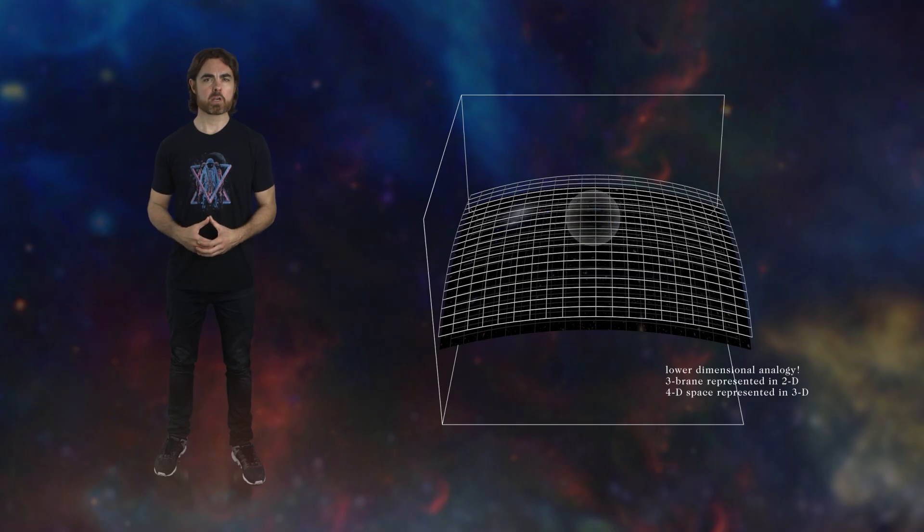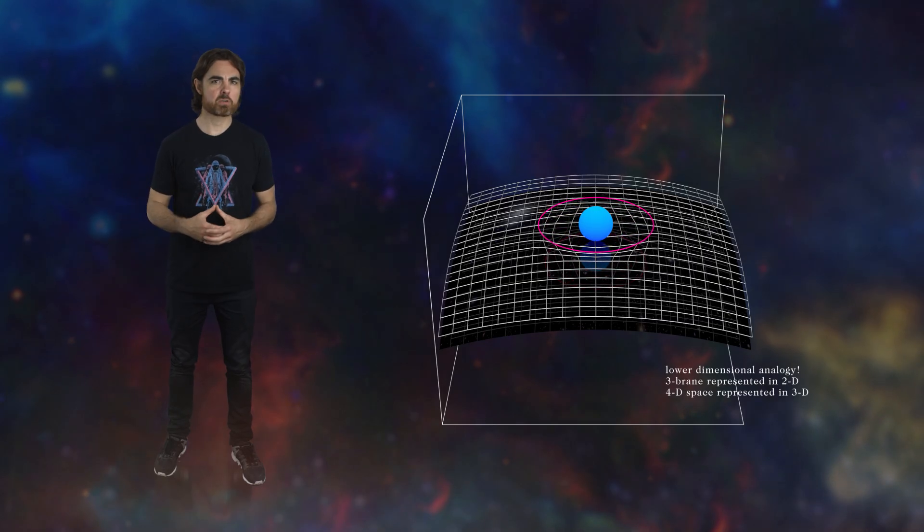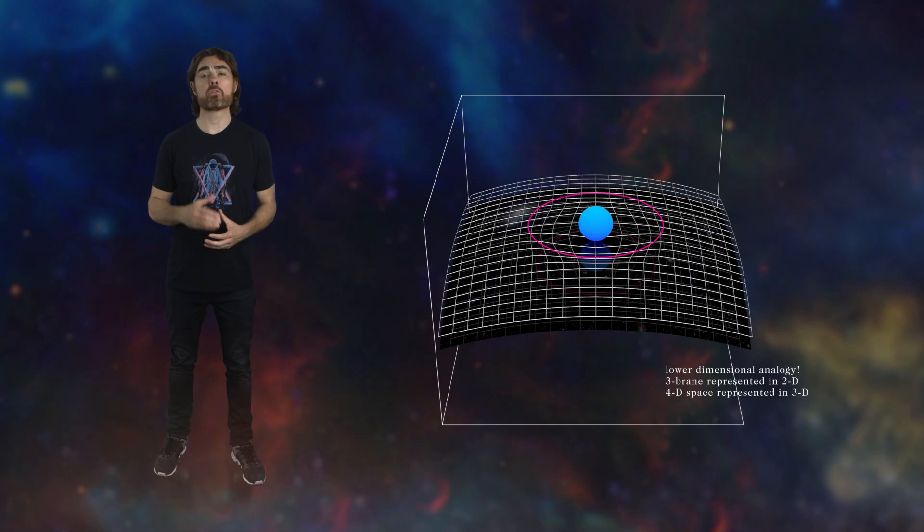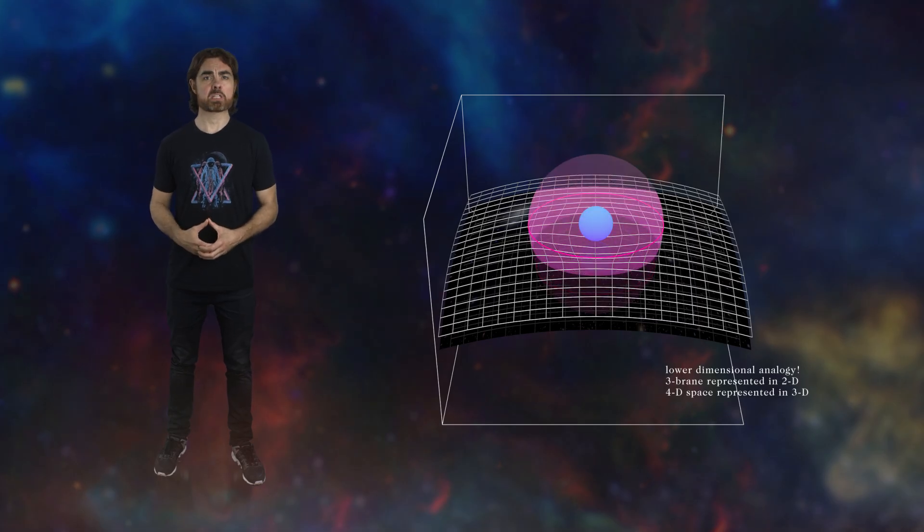On some spatial scales, you even get the inverse square law for gravity. But on other spatial scales, gravity can behave very differently. If gravity spreads out in four dimensions rather than three, then it should become much weaker. This can be used to explain the general weakness of the gravitational force on all but the tiniest scales. It can also be used to explain another mysterious phenomenon, dark energy.